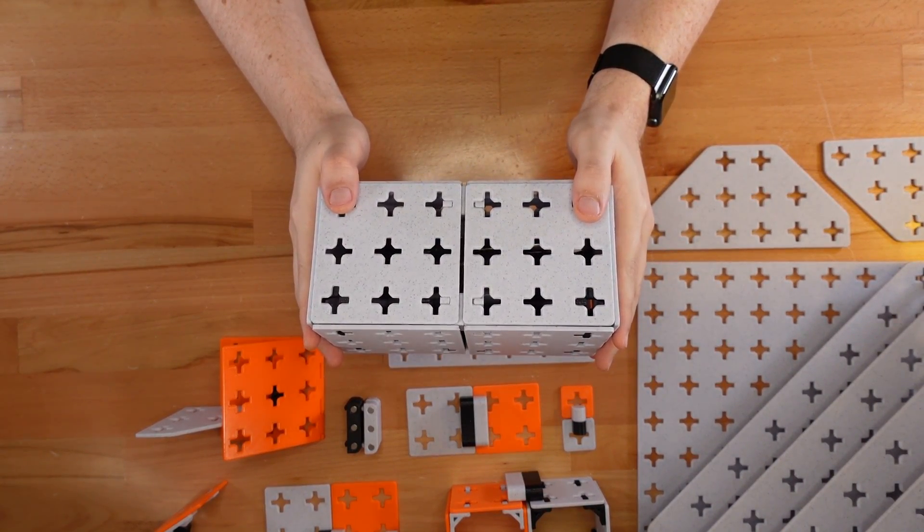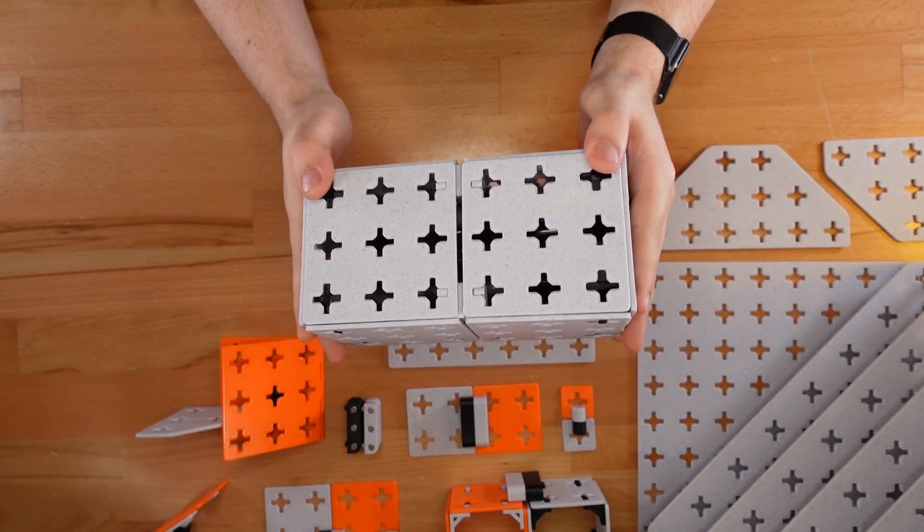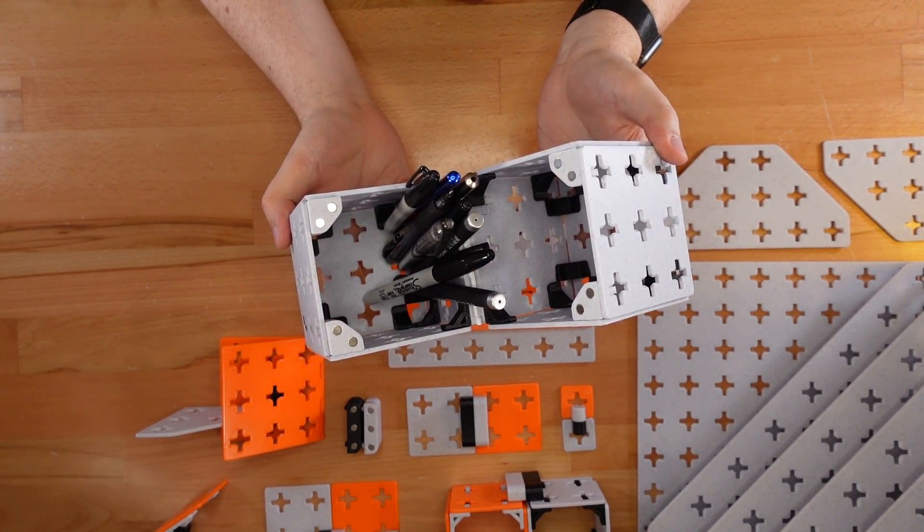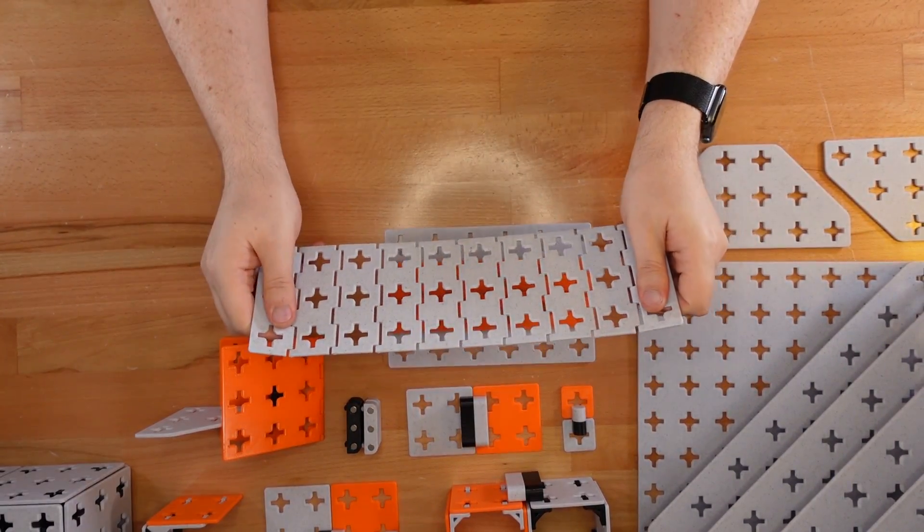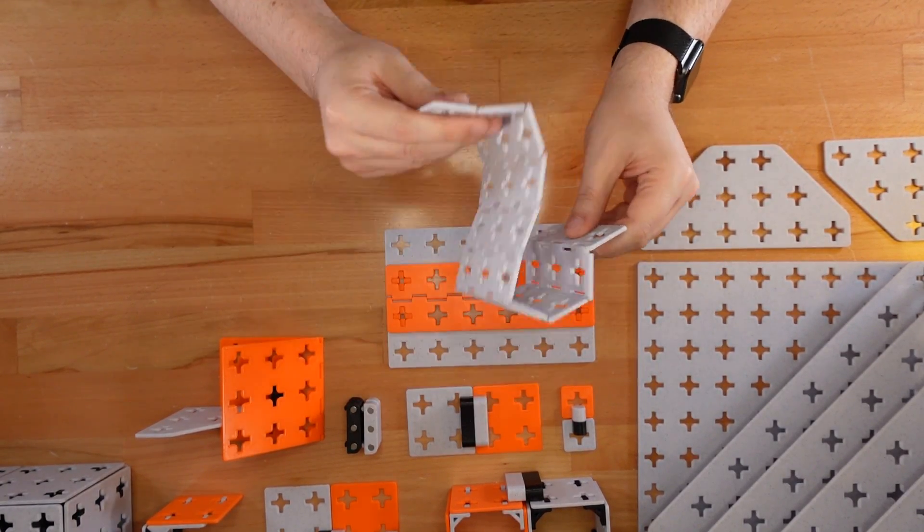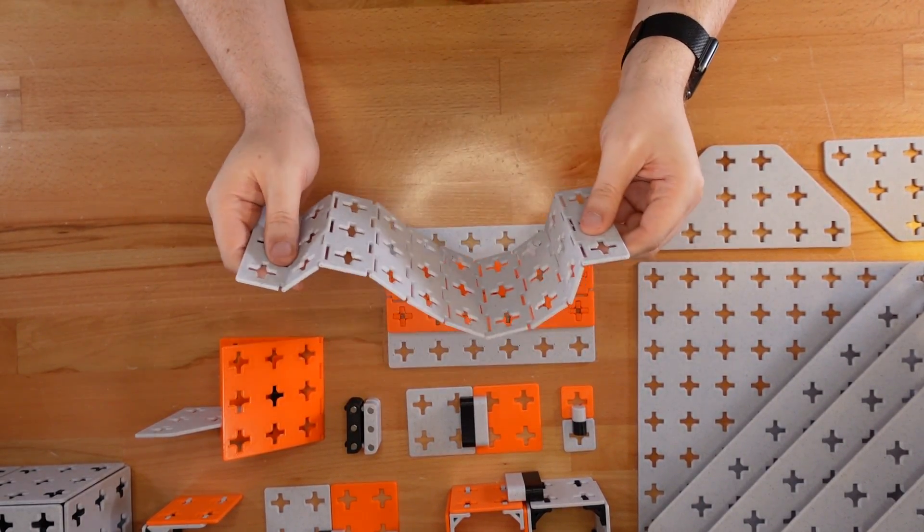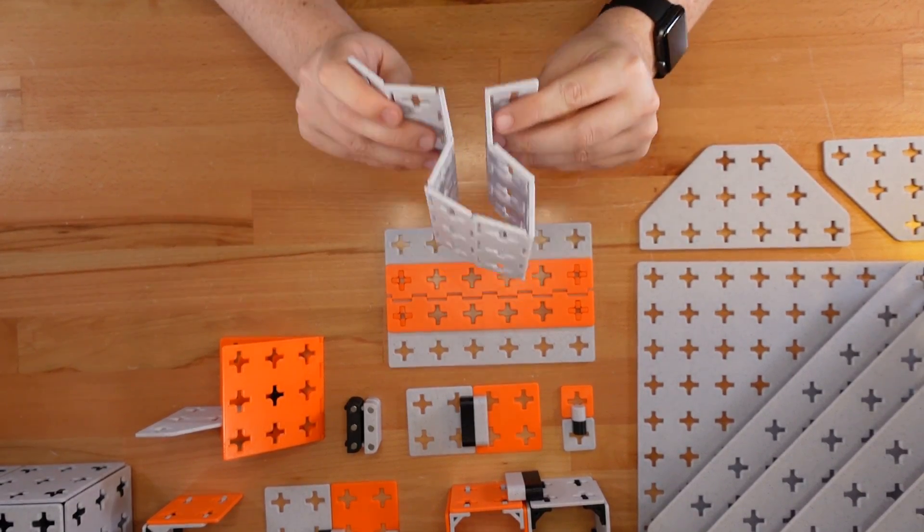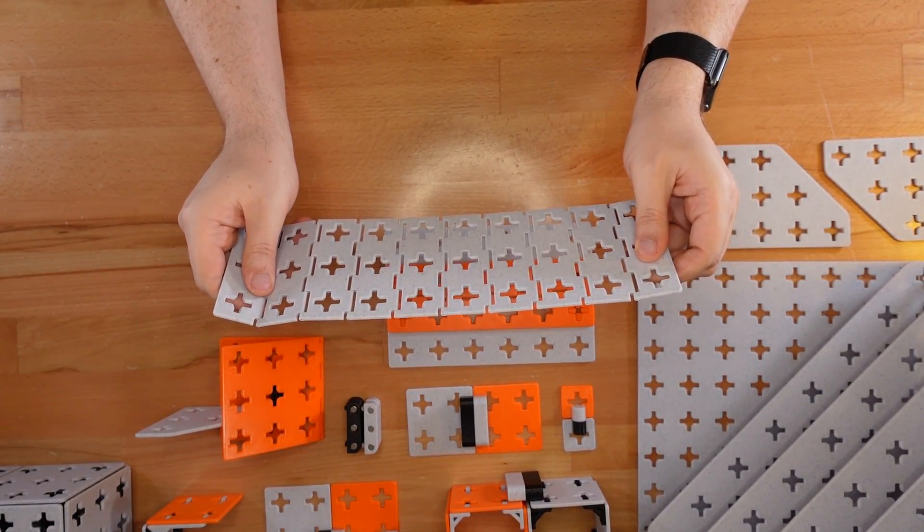Or use them with magnet connectors to create containers like this pencil holder. Hinge panels can be extended into longer, flexible chains. Why would you want that? I don't really know, but I think it's pretty neat.